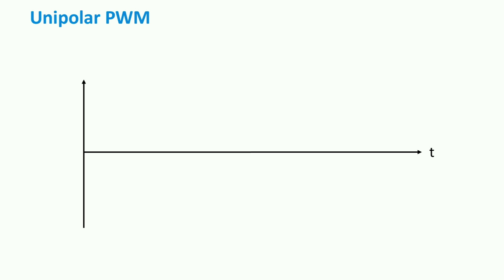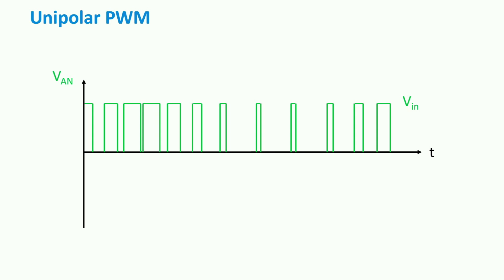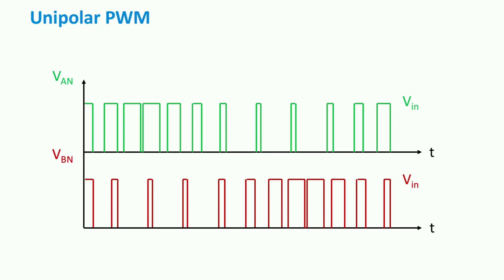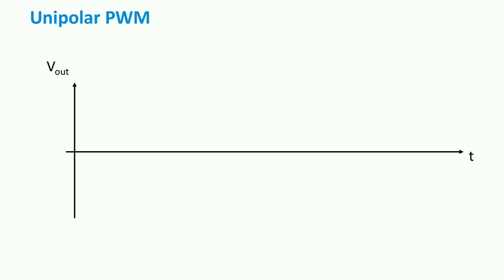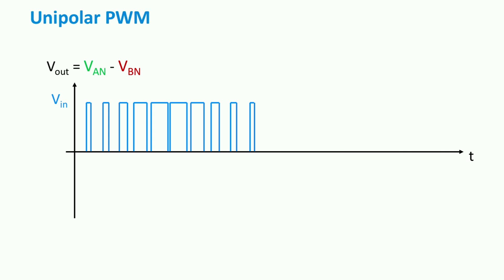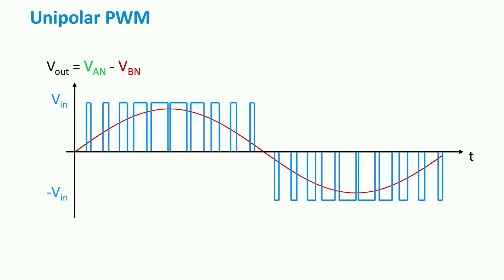Once the signals are compared, we obtain the voltage on leg A compared to a neutral point. The amplitude of the pulses is either the input voltage or zero. The same result is obtained for leg B. Since the negative sinusoidal signal equals the positive signal moved by half a period along the time axis, the two pulse trains are the same but just translated by half a period. The output voltage is the difference between the two voltages on the legs. In this type of PWM scheme, the variation in the output is between plus V input and zero, and between zero and minus V input. Just like the bipolar case, a pure sine can be drawn from Fourier analysis of the output signal. This sine is the fundamental harmonic which carries the real power delivered by the inverter.